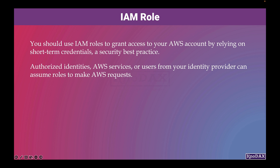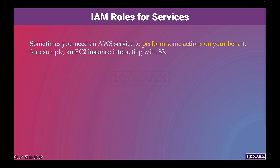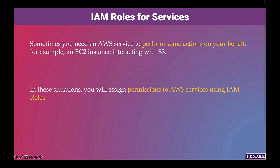Authorized identities, AWS services, or users from your identity provider can assume roles to make AWS requests. Sometimes you need an AWS service to perform some actions on your behalf — for example, an EC2 instance interacting with S3. In these situations, you will assign permissions to AWS services using IAM roles.